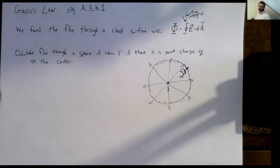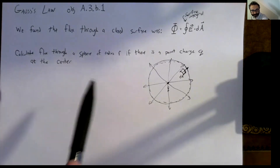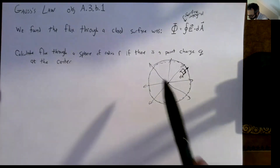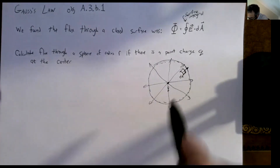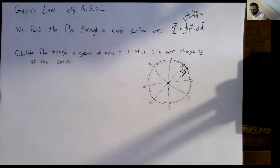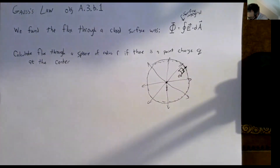We're going to start figuring out Gauss's Law by seeing if we can figure out what is the flux through a sphere of radius r, if there's a point charge q right at the center. So we're starting with a point charge at the center of a sphere, we're going to find the flux, and then we're going to see what we can generalize from that.